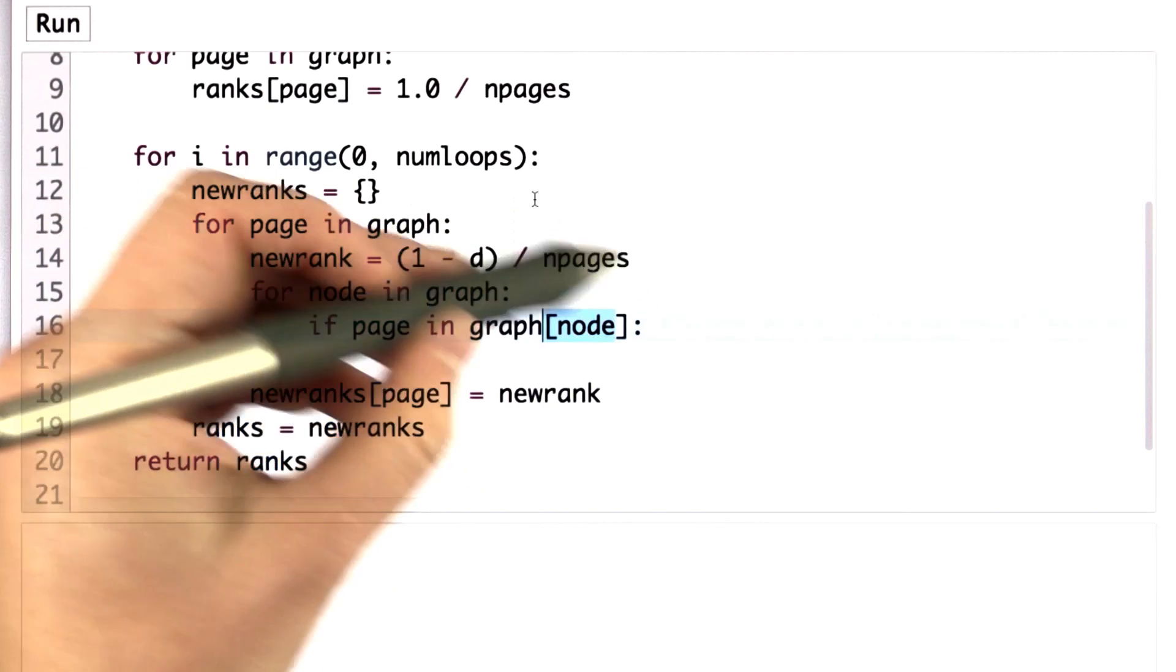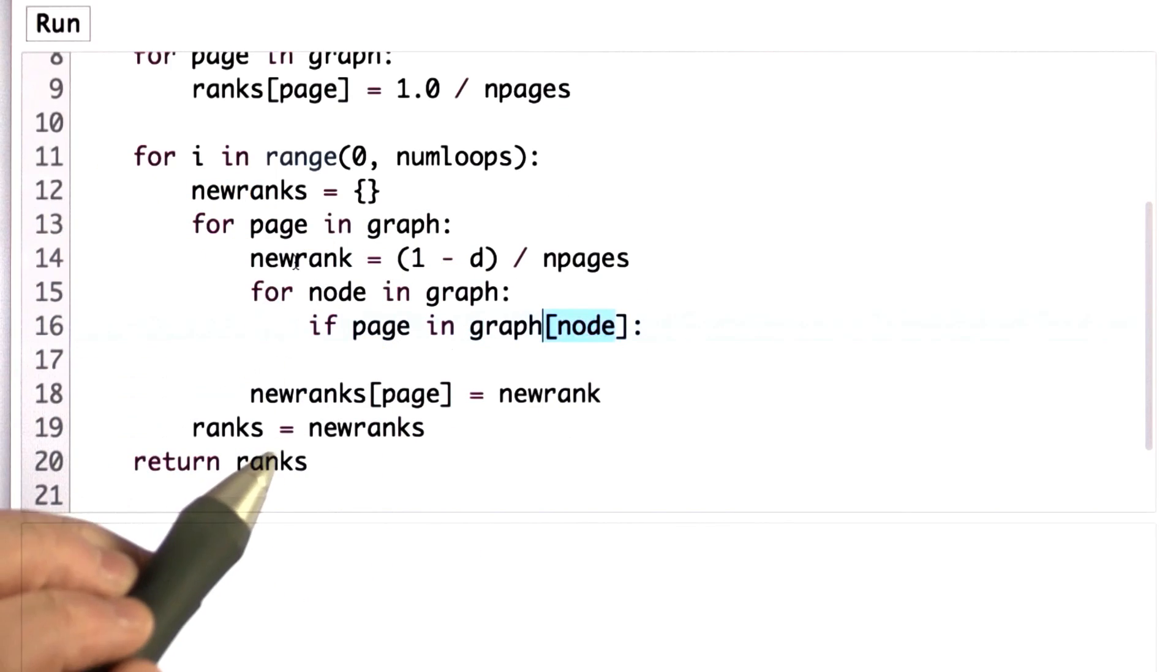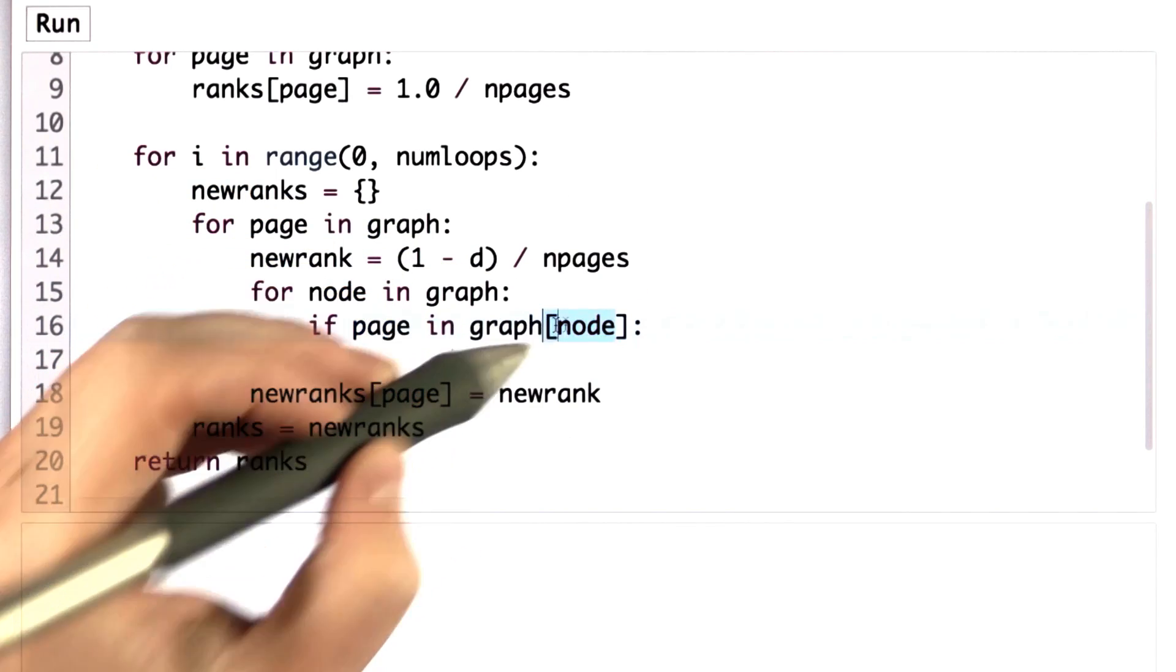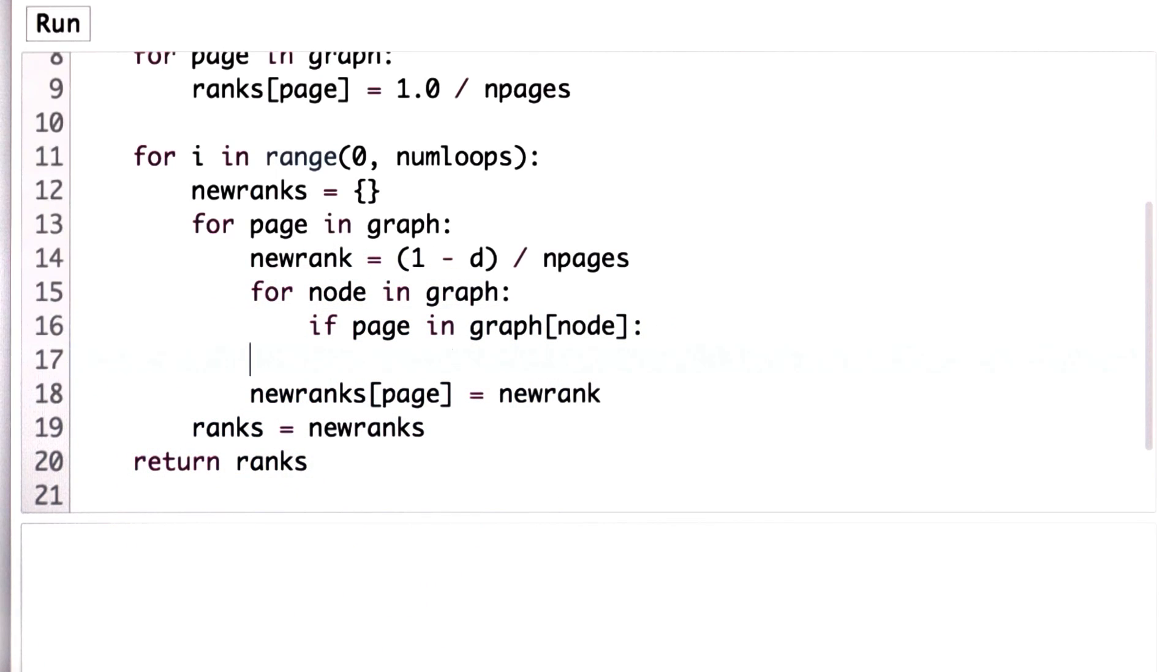So that means that we should add to new rank based on the rank of this node. So that's what we're going to do. We're going to add to new rank. And the new value is going to be the old value. We're summing into the value of new rank. We're going to multiply by d. That's our damping factor.